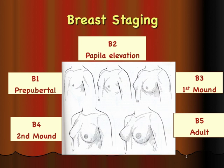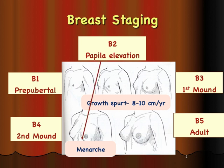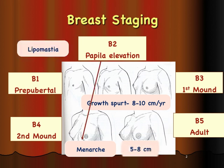Stage two indicates that the papilla has started to elevate, and this marks the time when growth spurt is starting to happen at around 8 to 10 centimeters per year. From stage two until menarche is typically two years, and growth will be around 5 to 8 centimeters beyond menarche.